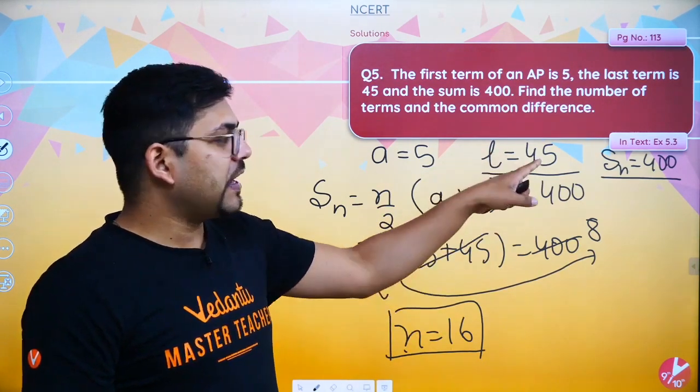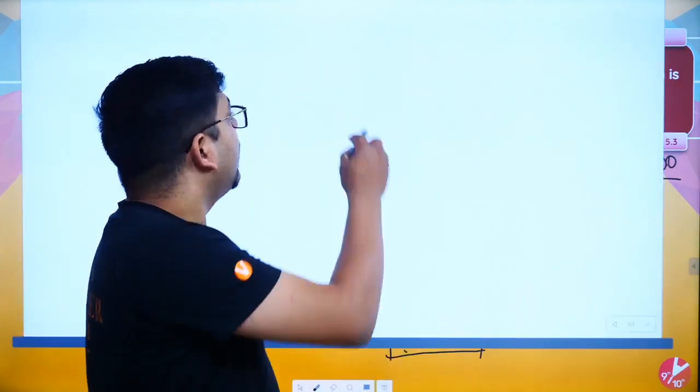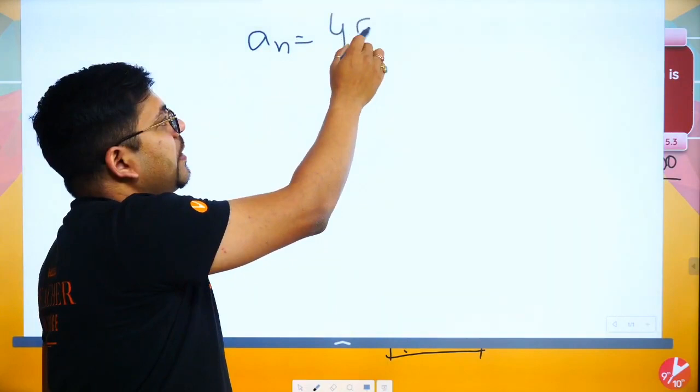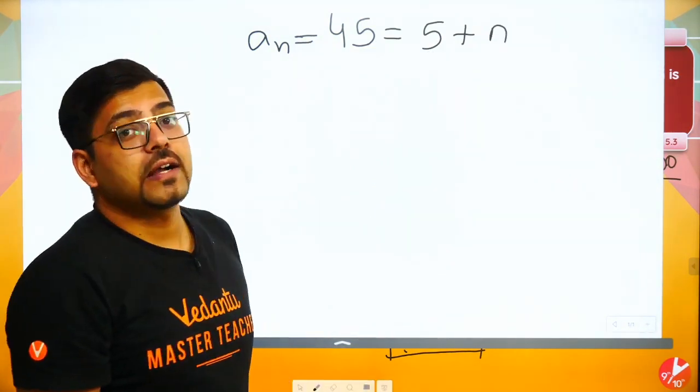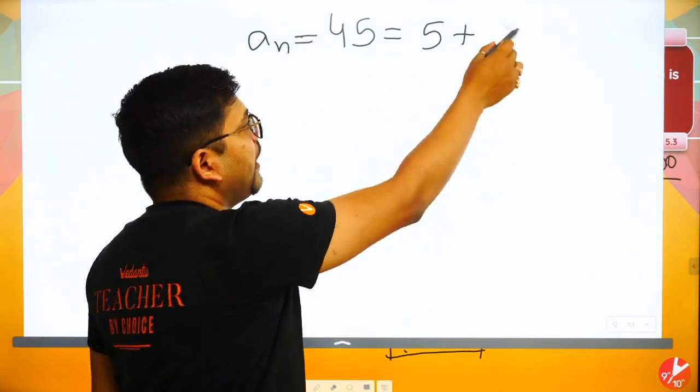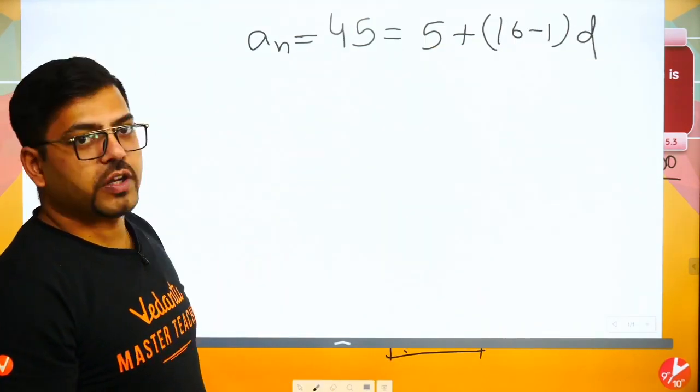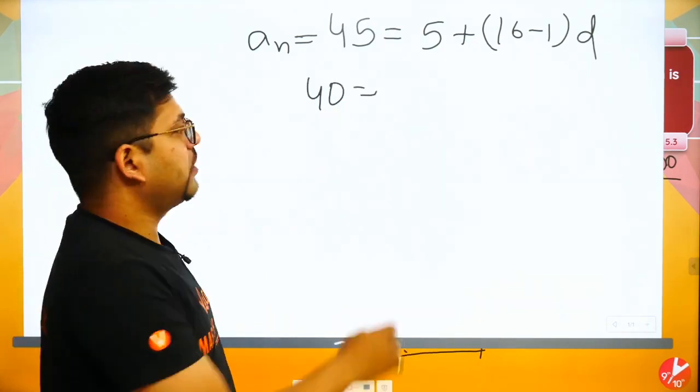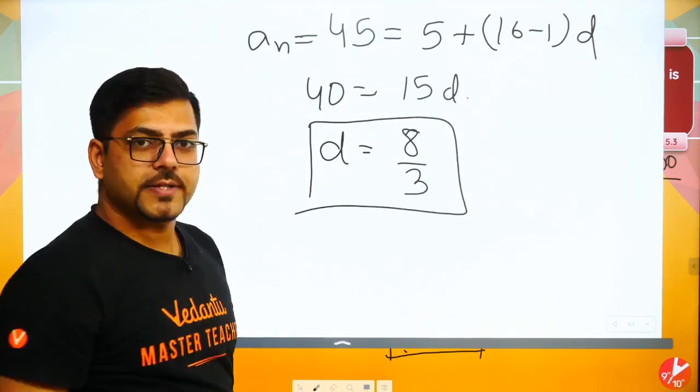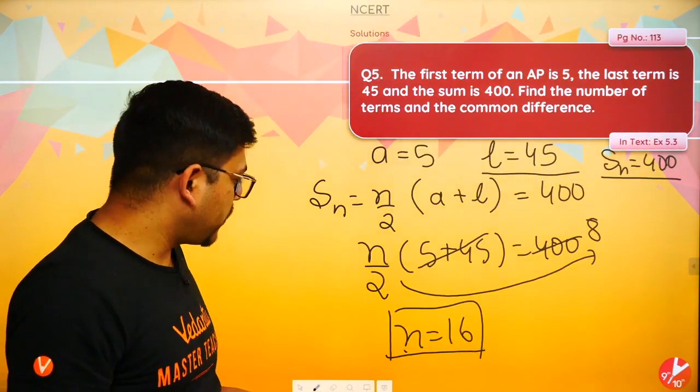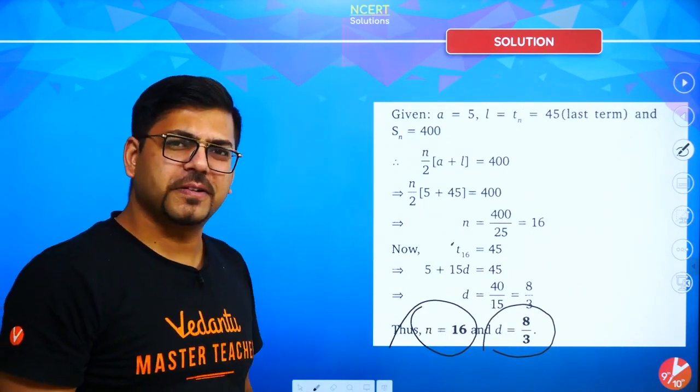16 terms means the 16th term is 45 because total number of terms is 16. So if the 16th term is 45 and the first term is 5, then we can find the common difference. It's very simple. AN, the Nth term is 45, because this is your last term. Nth term is A plus N minus 1 into D. N is 16, so you write 16 minus 1 into D. 45 equals 5 plus 15D. 40 equals 15D. D is equal to 40 by 15, which is 8 by 3. So the answer is N is 16, number of terms is 16, and common difference is 8 by 3.